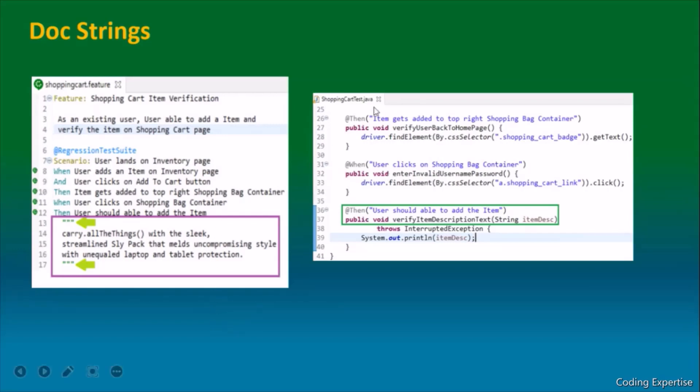In the right side, you could see ShoppingCartTest.java, it's a step definition file. We map the then step. The entire portion of text is being passed inside this particular method, verify item description text. This takes a parameter item description, and you can have any parameter name. As a best practice, we must need to place two spaces before this text so that the indentation looks better. That's about doc strings.